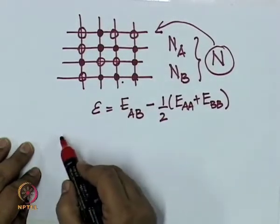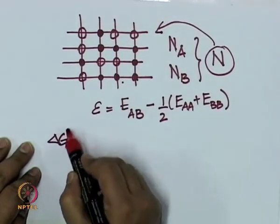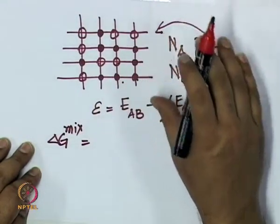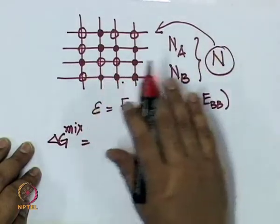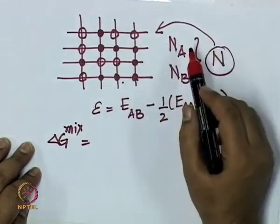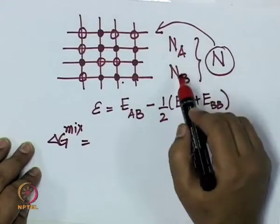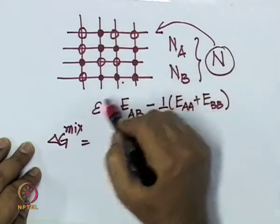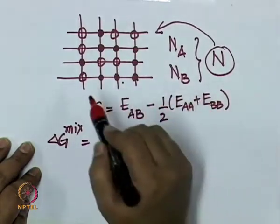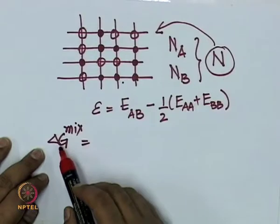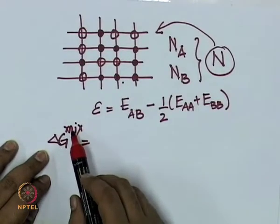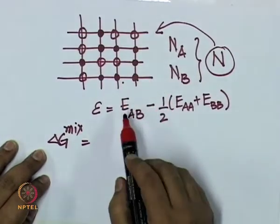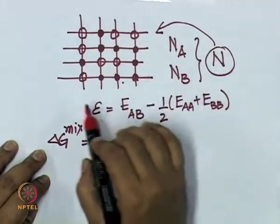We showed that the free energy of mixing - if you take A atoms by themselves and B atoms by themselves and calculate the free energy, then put them together in a given lattice and distribute A and B atoms on the lattice and calculate the free energy.